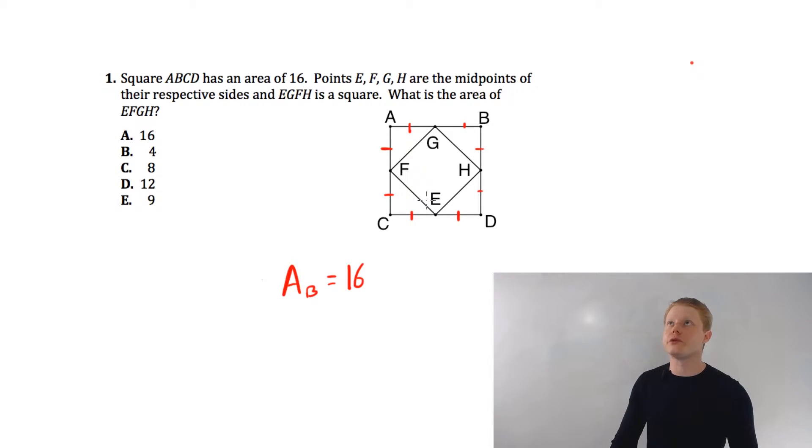There's about 3,000 ways to solve this. Not really, but there are several. So first things first is let's find the length of each side here. If the area is equal to 16, area of the square is side squared equals 16. That means each side is 4, or each little side here is 2.